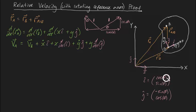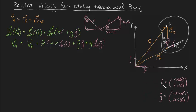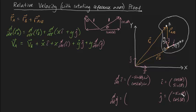Now we just need to differentiate these. d/dt of i turns into minus sine(theta) times d(theta)/dt, applying the chain rule, which is omega, plus cosine(theta) times omega. And d/dt of j turns into negative cosine(theta) times omega plus negative sine(theta) times omega. What's really important to notice is that the derivatives of our unit vectors can actually be written in terms of the original unit vectors.